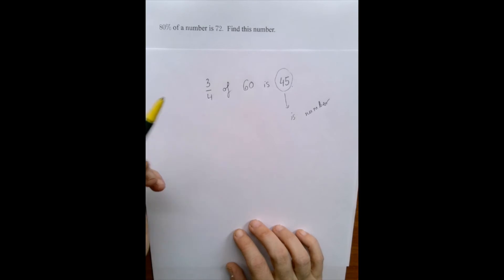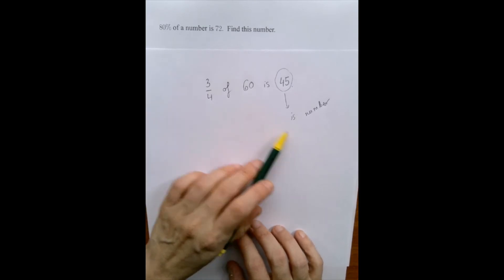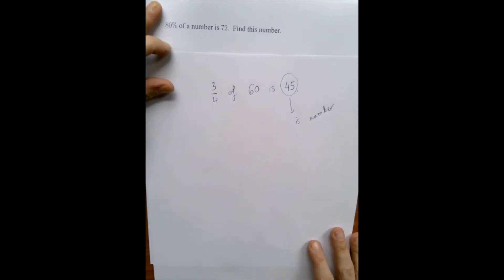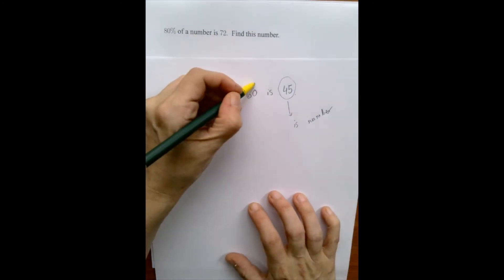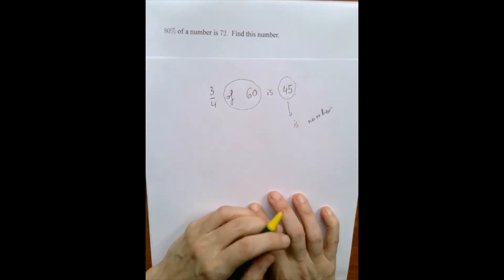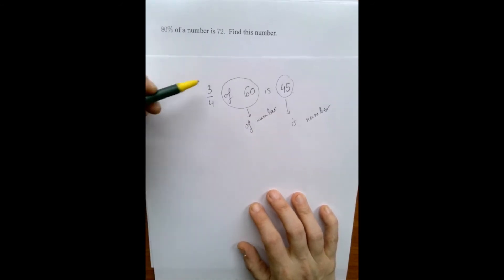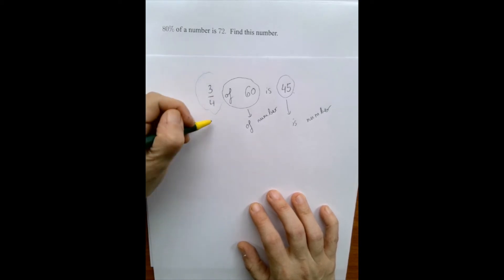And usually the word is is nearby, either before it or after it, but really close. Very similarly, we're going to call 60 the of number, also called the base. And this is probably the most easy to identify. We're going to call this the fraction.